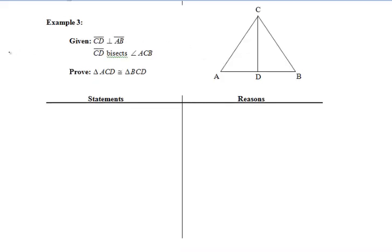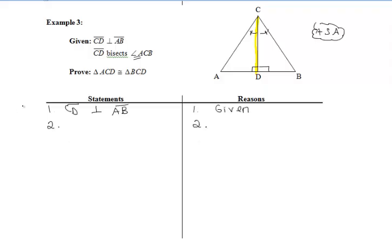For example 3, fill in the tick marks on the diagram — you must mark your diagram to receive credit. Since CD is perpendicular to AB, right away we think about right angles forming there. We're also told CD bisects angle ACB, which is the large angle at the top, giving two smaller congruent angles. With two angles and a shared side CD included between them, we'll be using ASA.